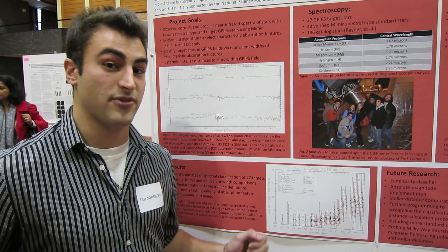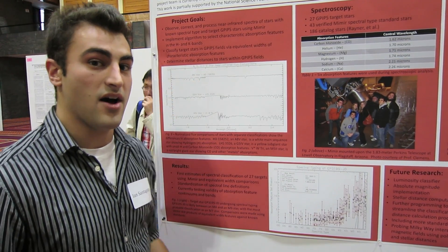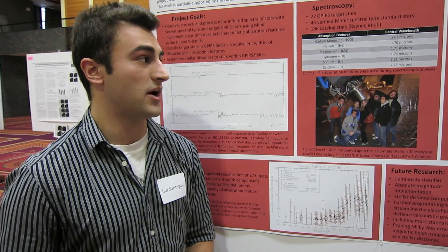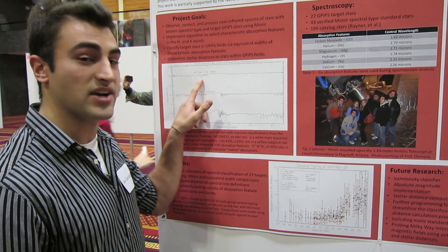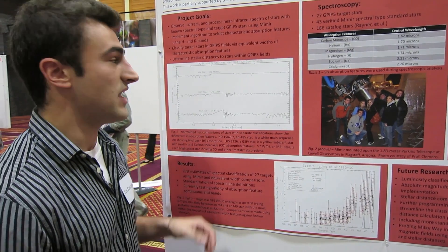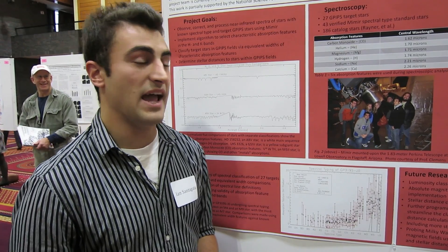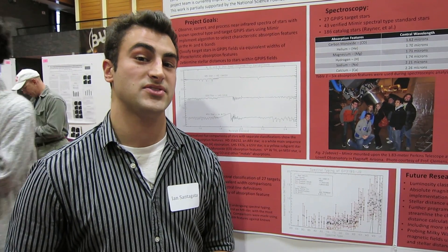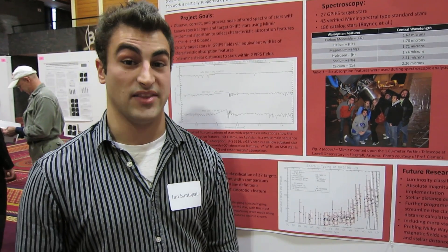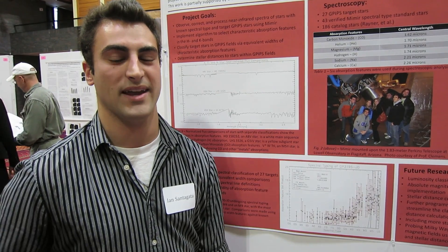Generally, each star has a different flux it gives off, and these little divots you see here are spectroscopic features for each element. For example, this right here means that a star has hydrogen in it at 1.74 microns. I take the area under the continuum, which gives us a numerical value that can be used to compare and classify the star. From this classification, we can get the distance to the star and map the magnetic field over the Milky Way galaxy.